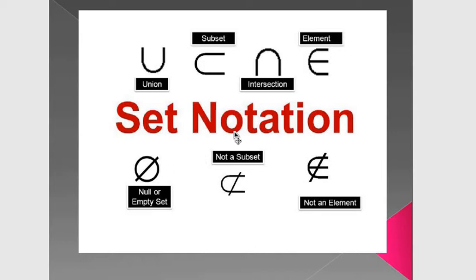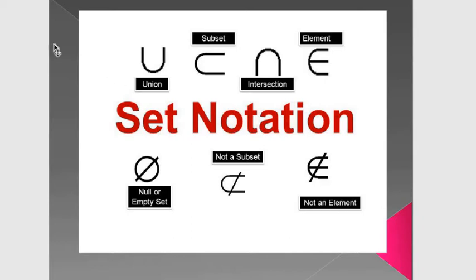Set notations mean the symbols I will use in operations of the set, like union, subset, intersection, belong — which is for elements — null or empty set, called phi, not a subset, and not belong or doesn't belong.